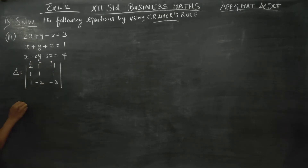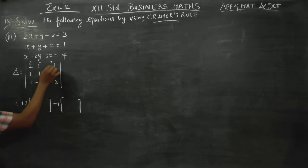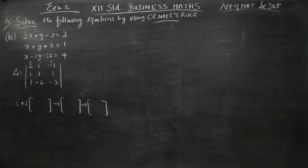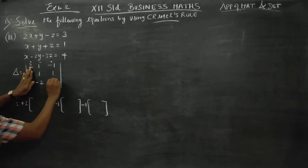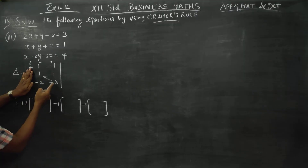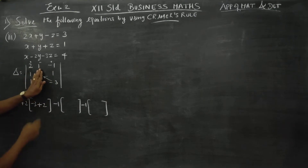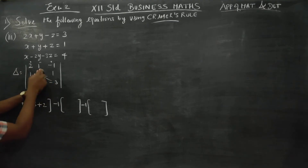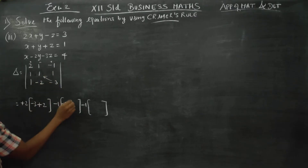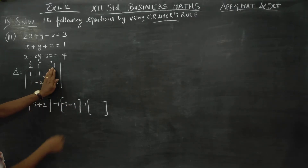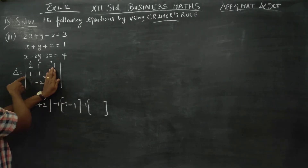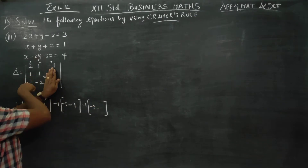Using the sign pattern plus, minus, plus for cofactor expansion: 2 into bracket, then minus 1 into bracket, then plus. The right hand side minus left hand side: right hand side minus 3 into 1 is minus 3, minus left hand side minus 2 is plus 2. Then close. Right hand side minus 3 into 1 is minus 3, minus left hand side: 1 ones are 1. Then close. Right hand side minus 2 into 1 is minus 2, minus 1.